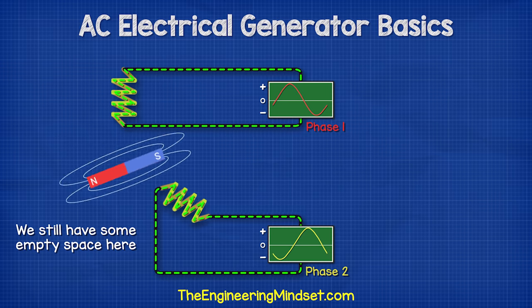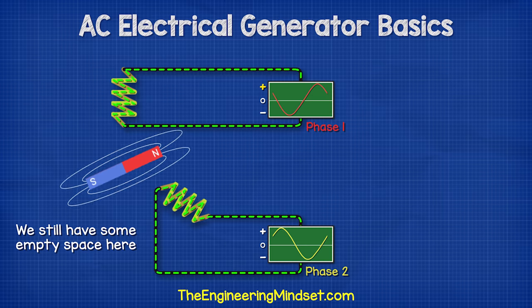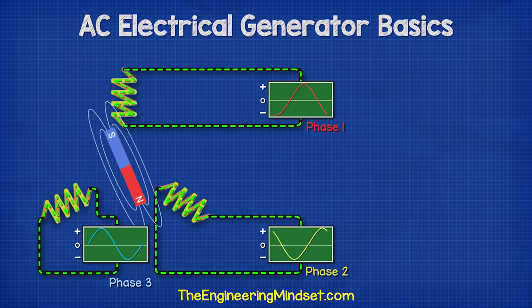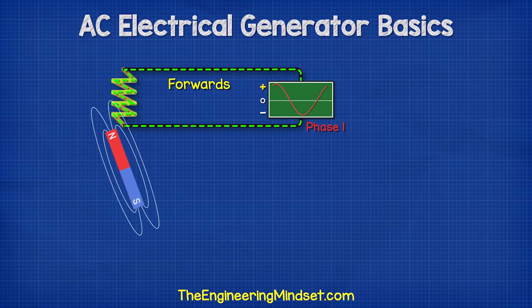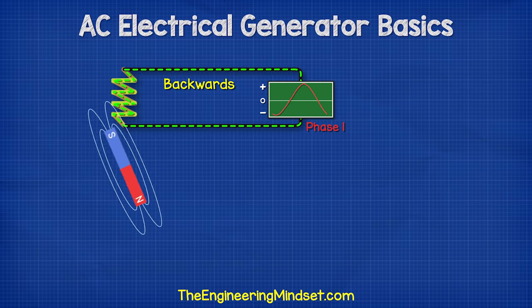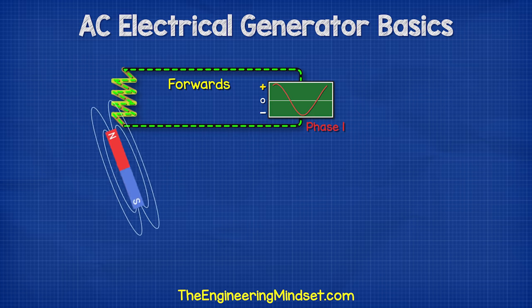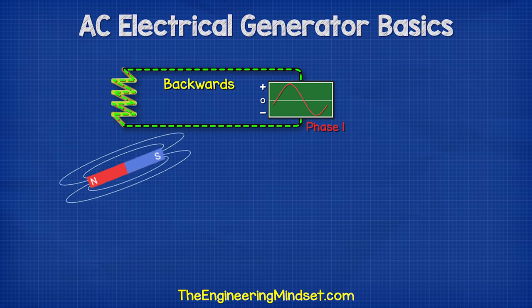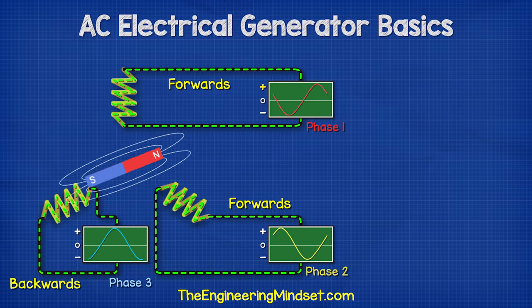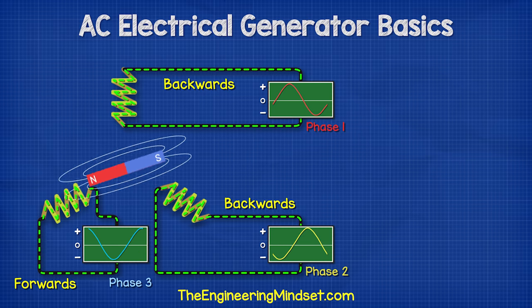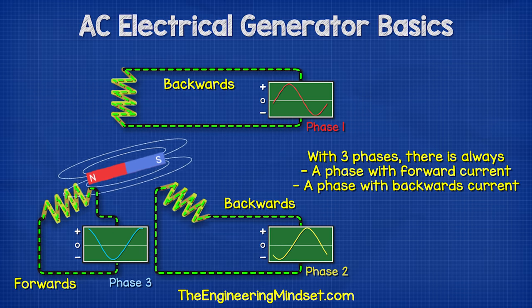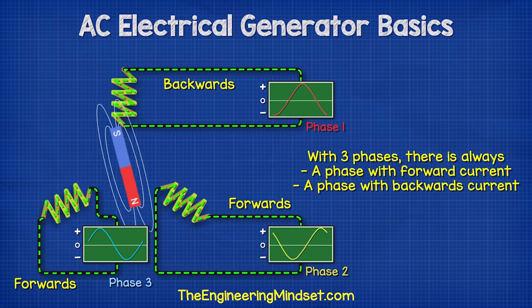We still have empty space, so we can add another set of coils at 120 degrees from the previous set to create a third phase. With just a single phase, for every rotation of the magnet, half the time the current is flowing forwards and half the time backwards. But with three phases, we always have a phase flowing forwards and always have a phase flowing backwards, which means we can utilize this to provide more power.